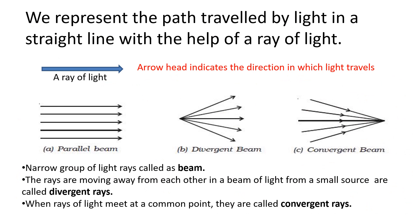We represent the path traveled by light in a straight line with the help of a ray of light. The arrow head indicates the direction in which light travels. See the three diagrams here. The parallel beam: a narrow group of light rays called as beams.